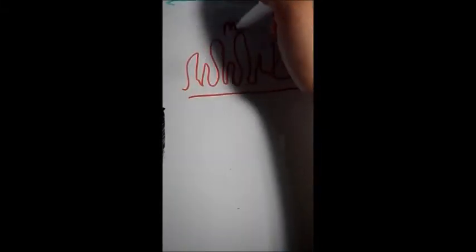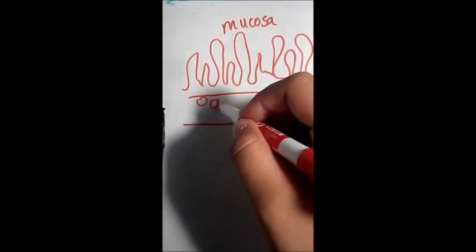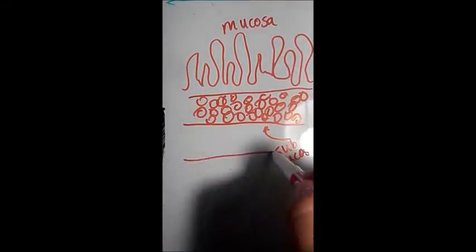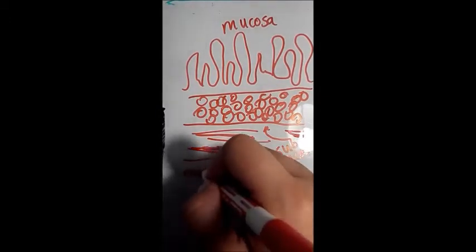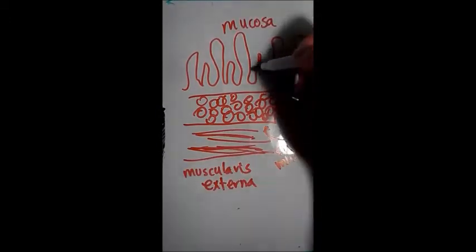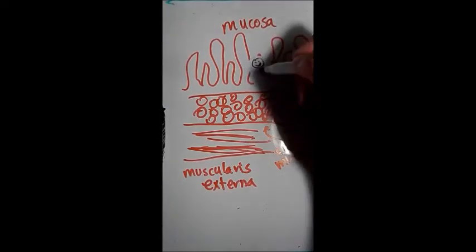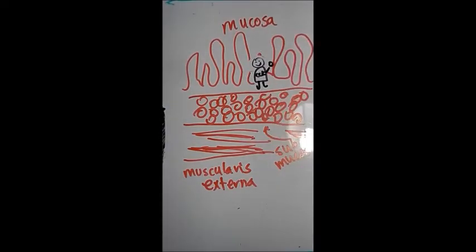So yeah, let me show you my room. This is the mucosa, where I usually chill out, and under that is the submucosa, and below that is the muscularis externa, but I usually don't hang out there. I just like chilling in my room. That's me, up in my room, in the mucosa.